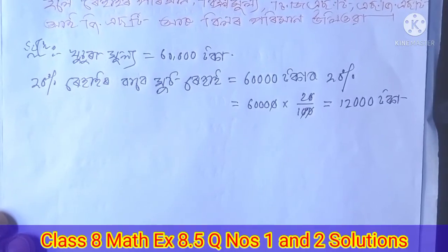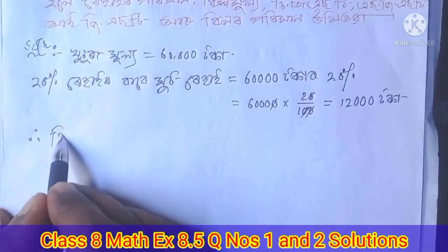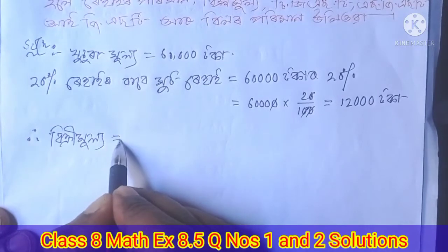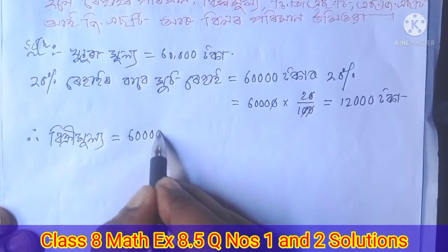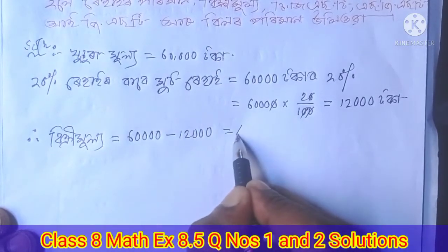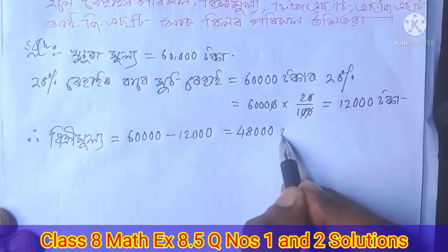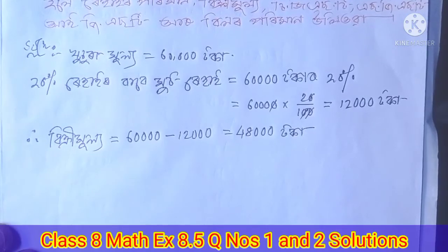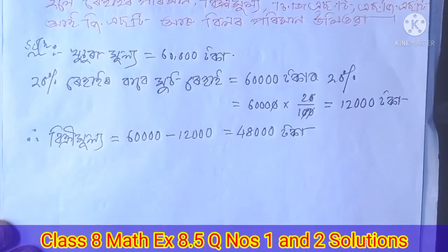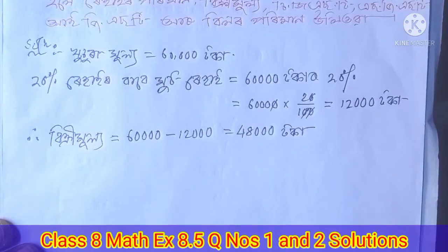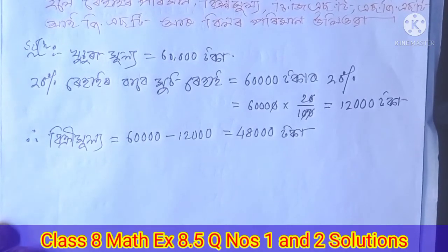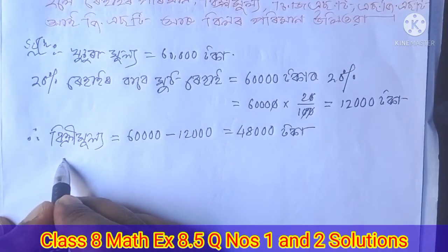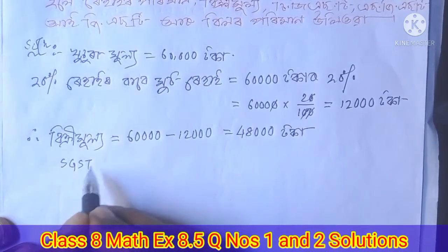60,000 into 20 divided by 100 gives 12,000. The value of 20% of 60,000 is 12,000. Then we add this to get the total. I will now calculate the GST components: SGST and CGST are each applicable here.